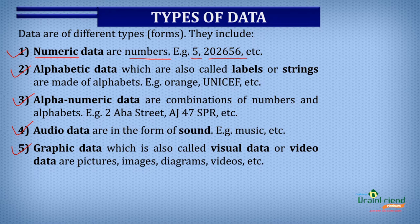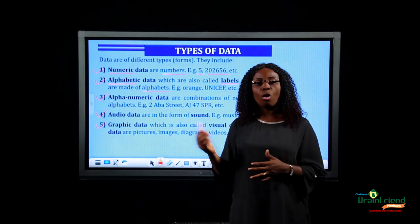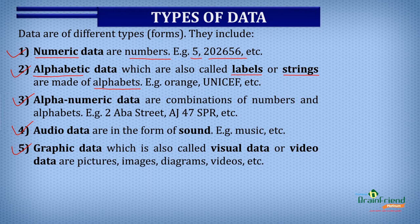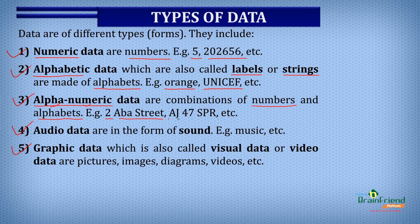The next type of data is alphabetic data, which is also referred to as labels or strings. This type of data is made up of alphabets — the different letters from A to Z which form words. Some examples of alphabetic data are the word 'orange' as well as abbreviations such as UNICEF. Alphanumeric data is a combination of alphabets and numbers, such as an address or coupon numbers.